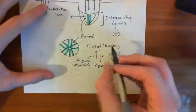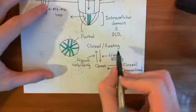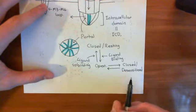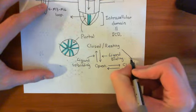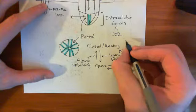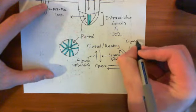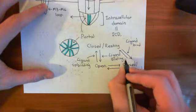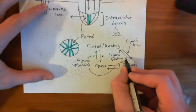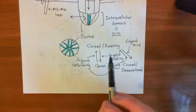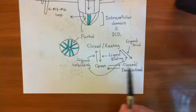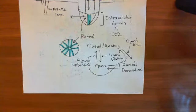Think of it as there are effectively two states: this closed-resting state, and then a state of flipping between the open and the closed-desensitized state. There is a link between the closed-resting and closed-desensitized: going from closed-resting to closed-desensitized requires ligand to bind, and going from closed-desensitized to closed-resting requires ligand unbinding. So ligand binding pushes it into this regime where it flips between the open state and the closed-desensitized state.